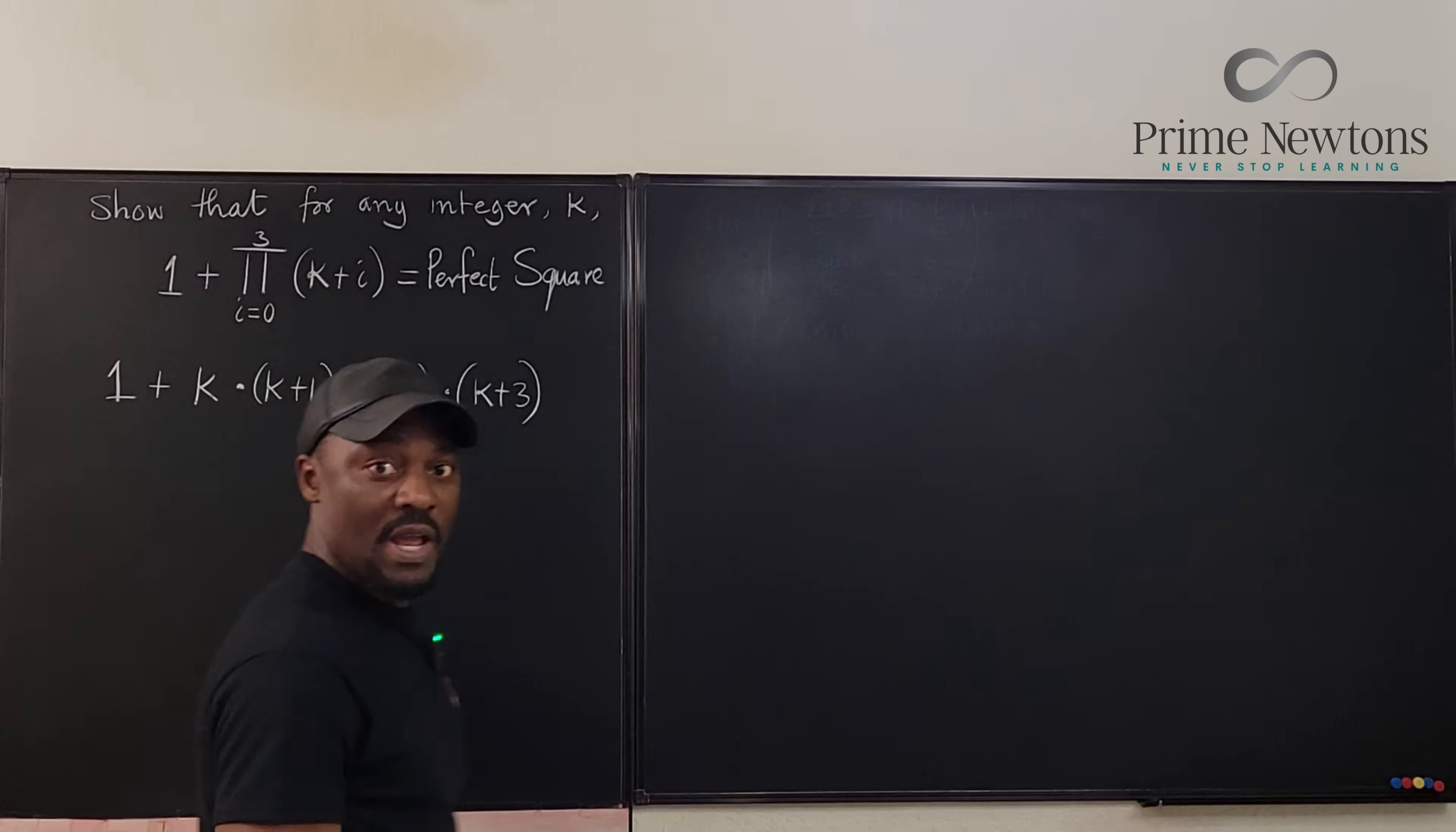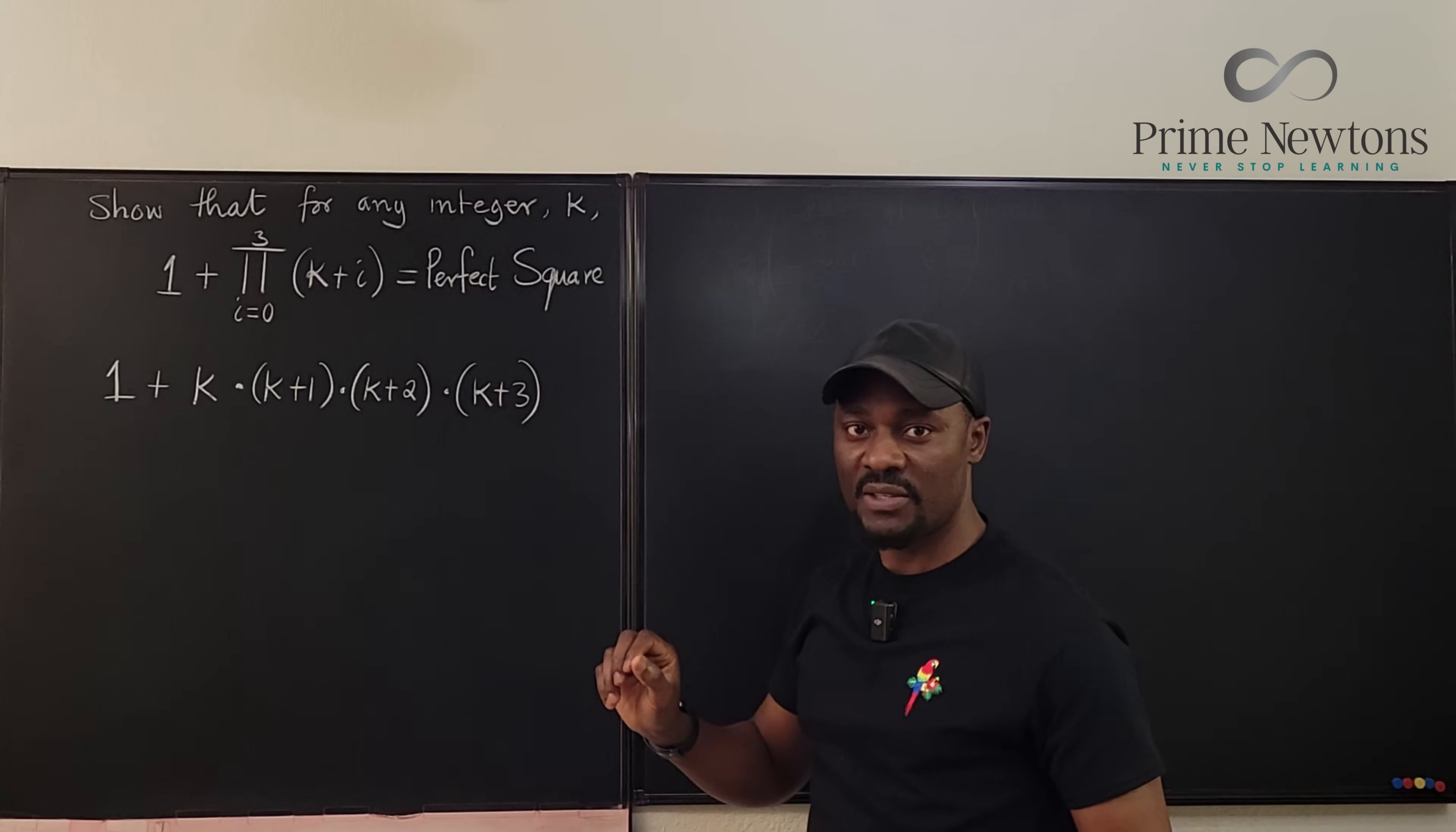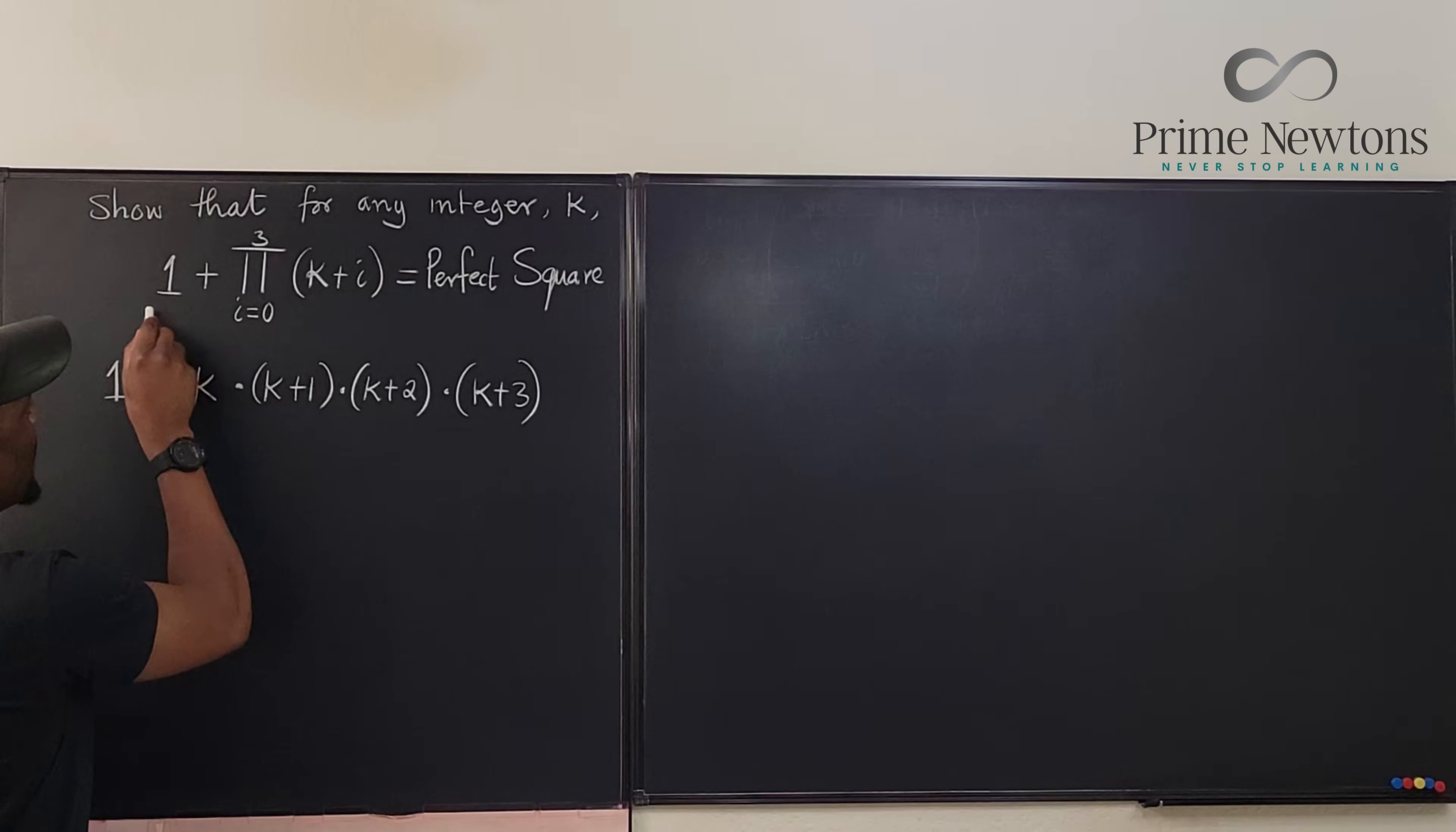If you write out this notation, this is what you have: 1 plus k times k plus one times k plus two times k plus three. They want us to show that it will always be a perfect square. So we know that this notation here is what we wrote down here.